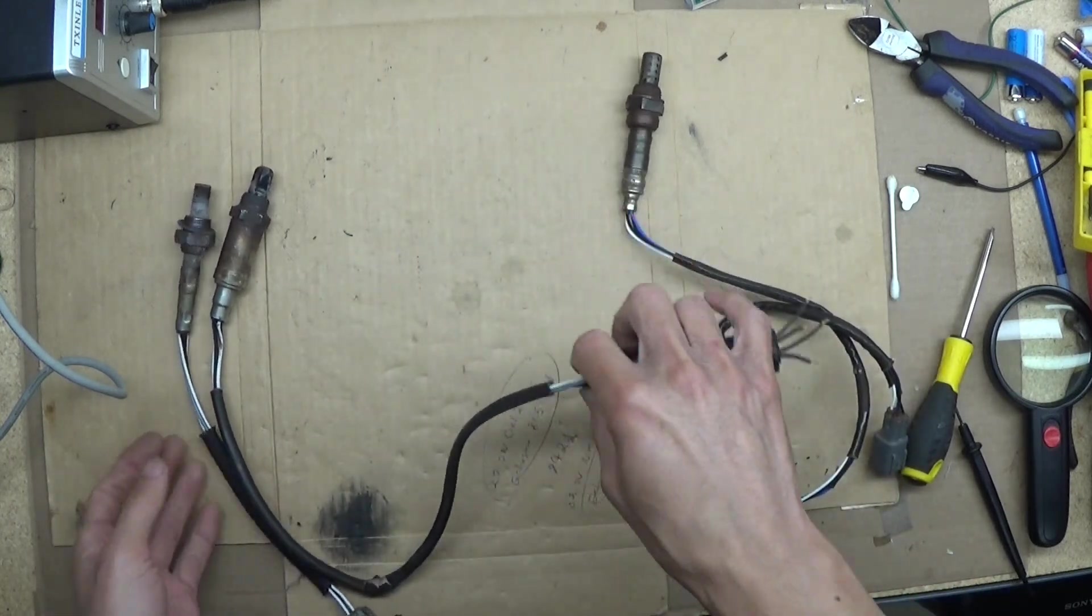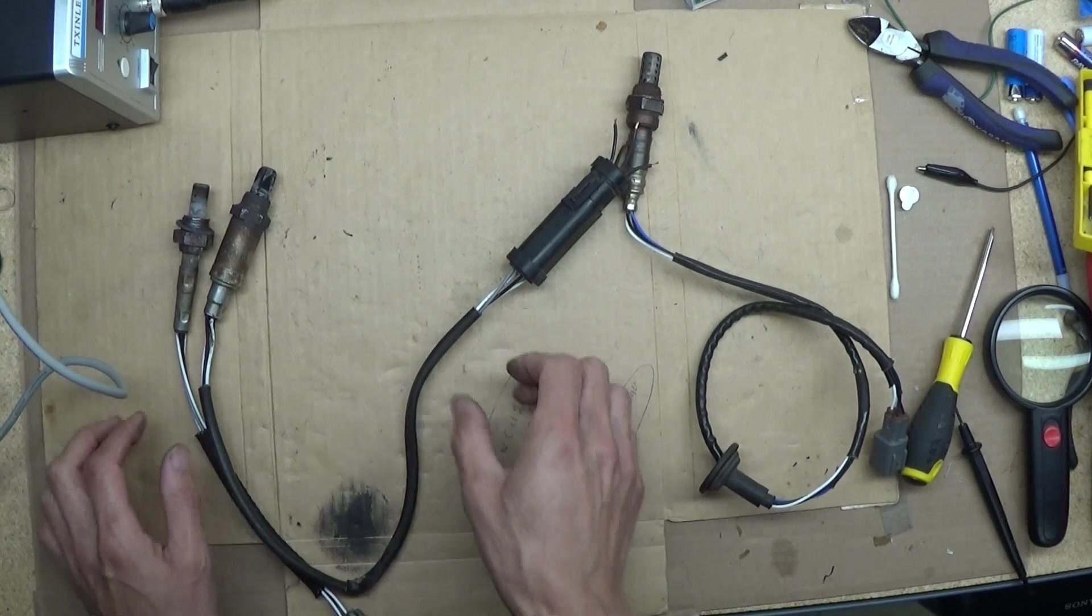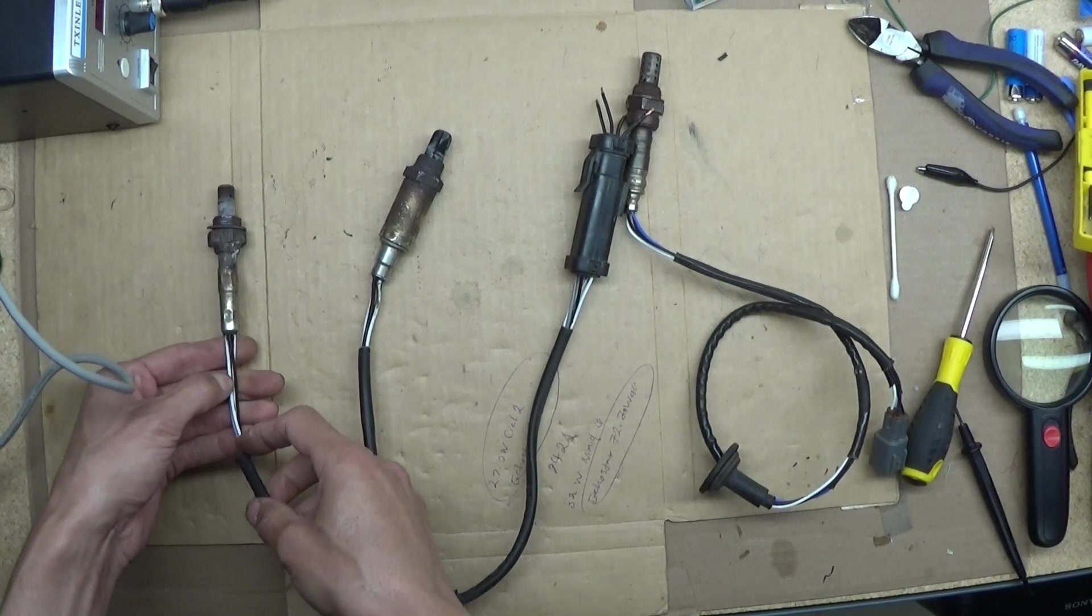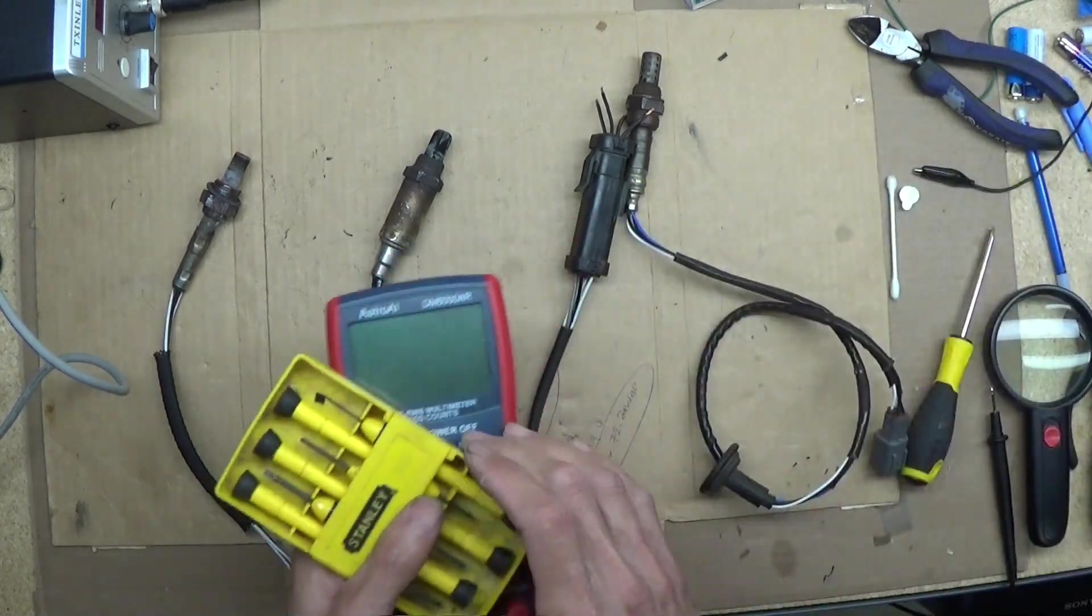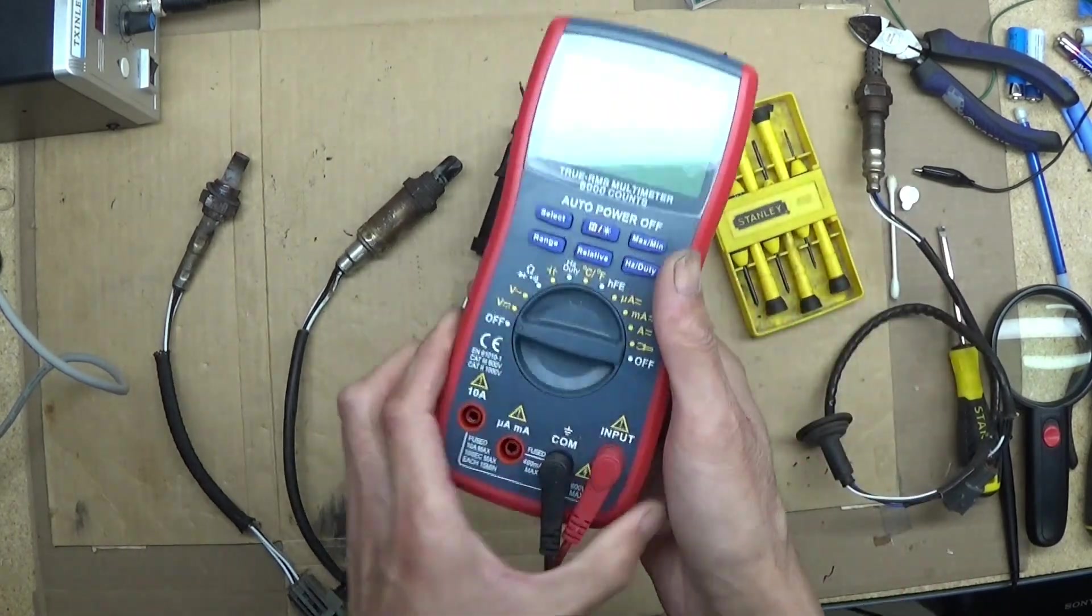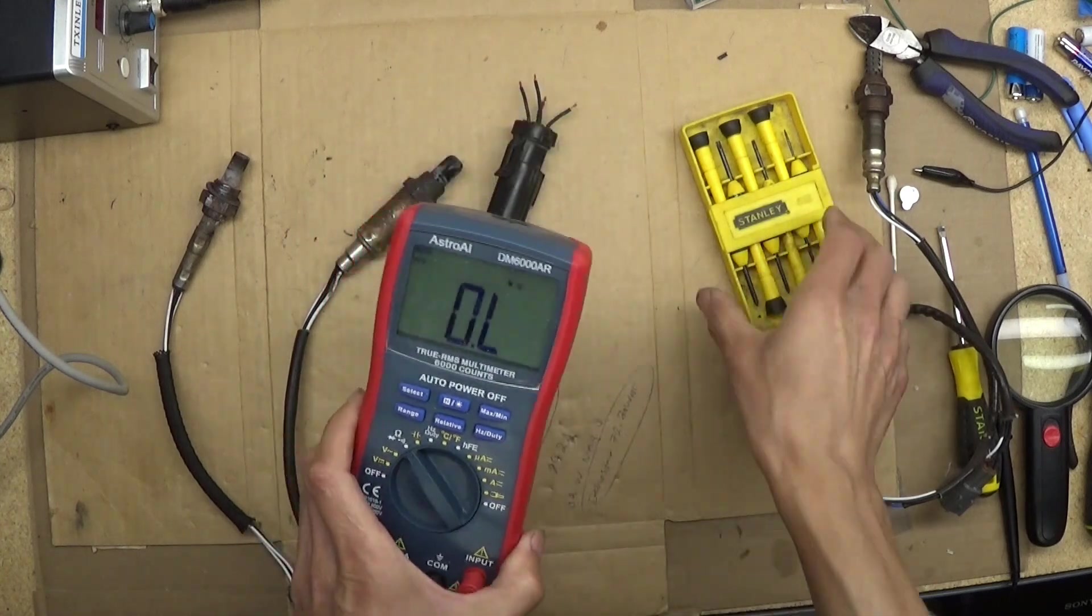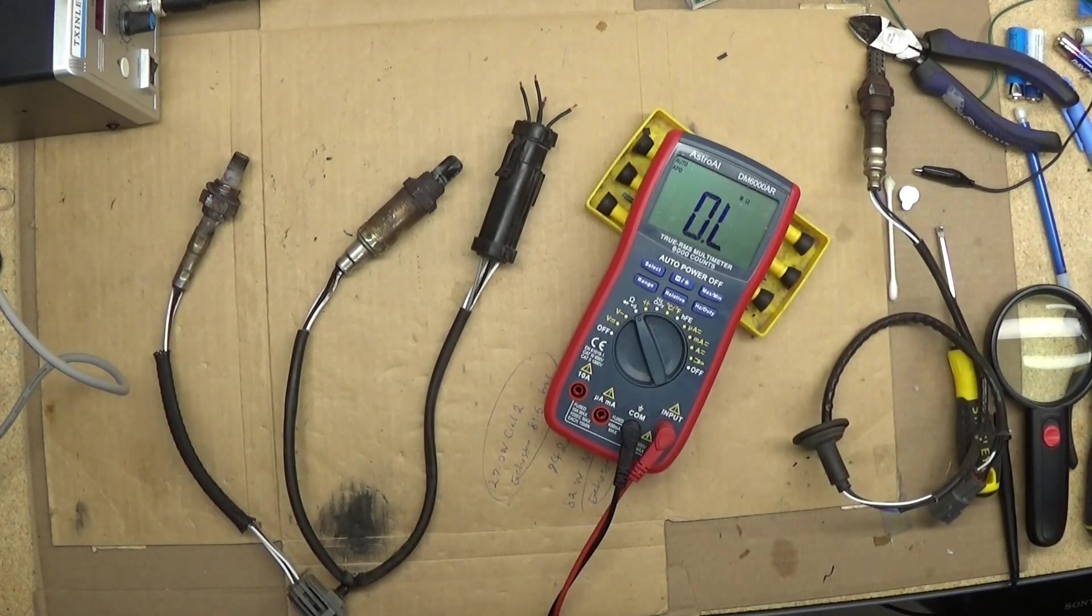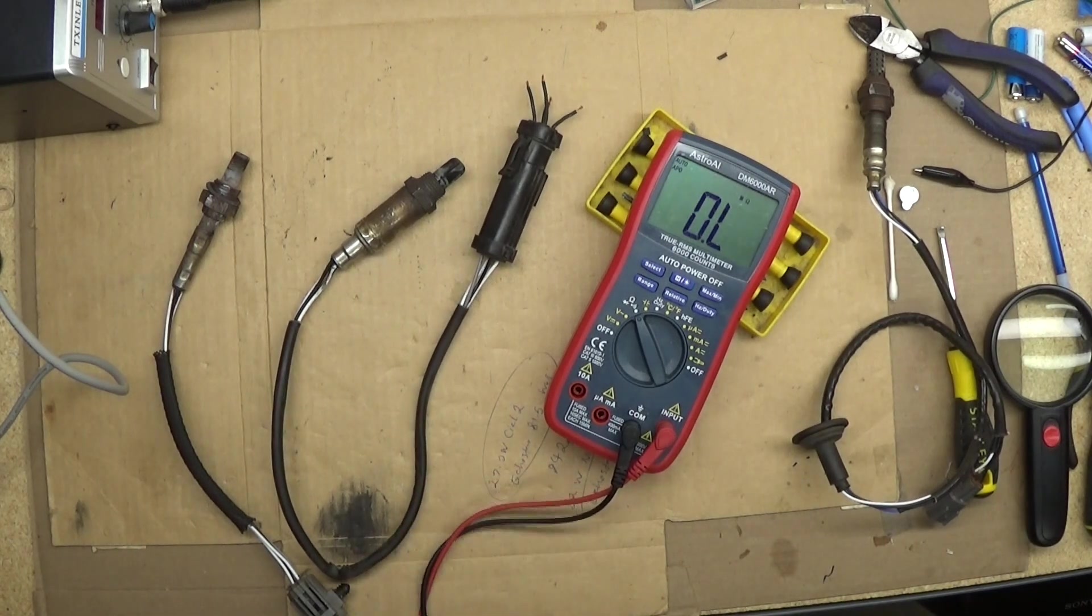...the heater wire. Now, this is outside of the car. With the multimeter, with an ohm meter, we just can measure the heater wire, whether it's working or not working. Now first, put this in ohm. Put the multimeter now in ohm. Now you can see better.